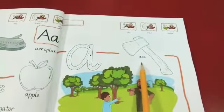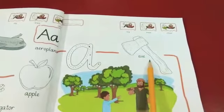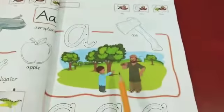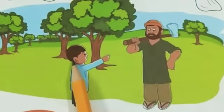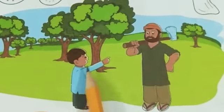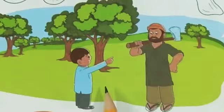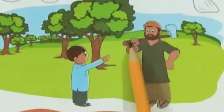A-X. A-X. Look, he is a farmer and he is a boy. Boy is asking the farmer: What is in your hand?